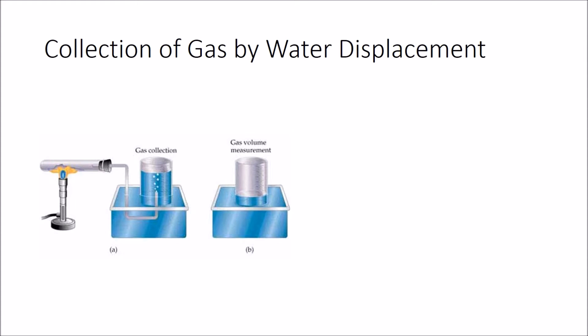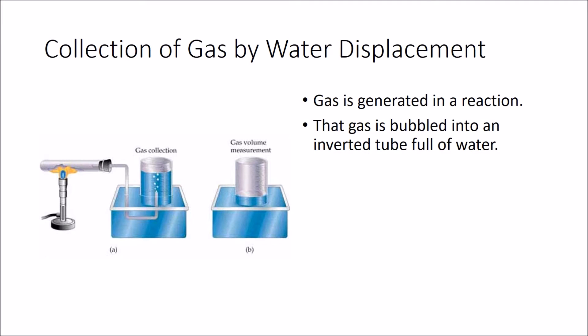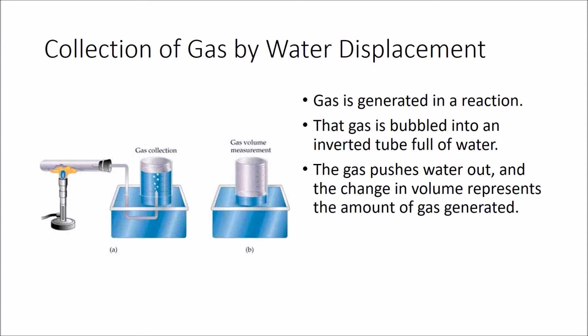Today's experiment deals with the collection of gas over water by displacement. We're going to generate some gas in a reaction, and that gas is going to get bubbled into an inverted tube that is full of water. The gas is going to push that water out, changing the volume, and that's going to represent the amount of gas that was generated. For the purpose of this example, 57.3 milliliters of water was displaced. So try to remember that number.